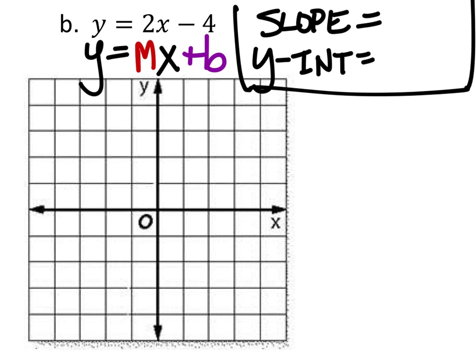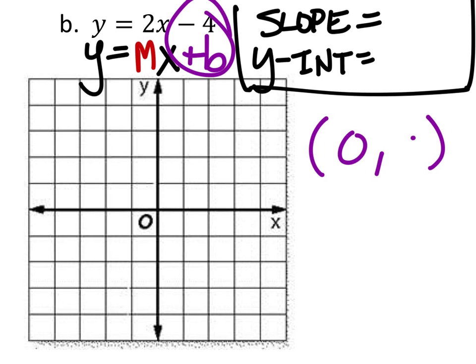So in other words, in order to graph this, we need the y-intercept first, which will always be at 0. The b value in this case would be a negative 4. So on the graph, we can graph this — negative 4 would be right about here.